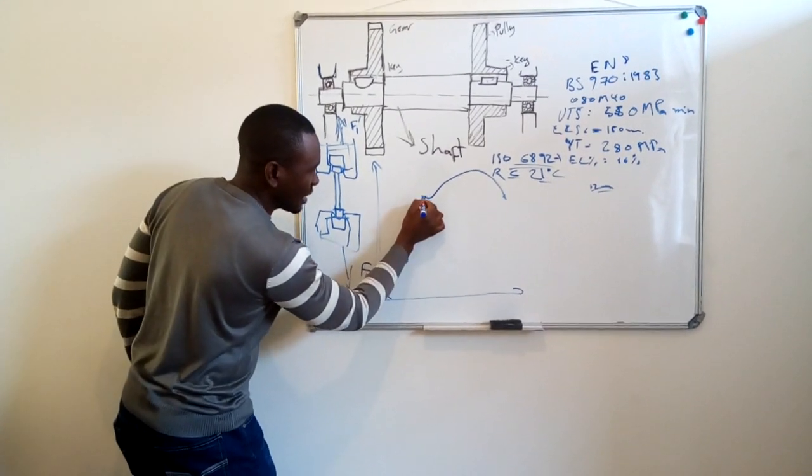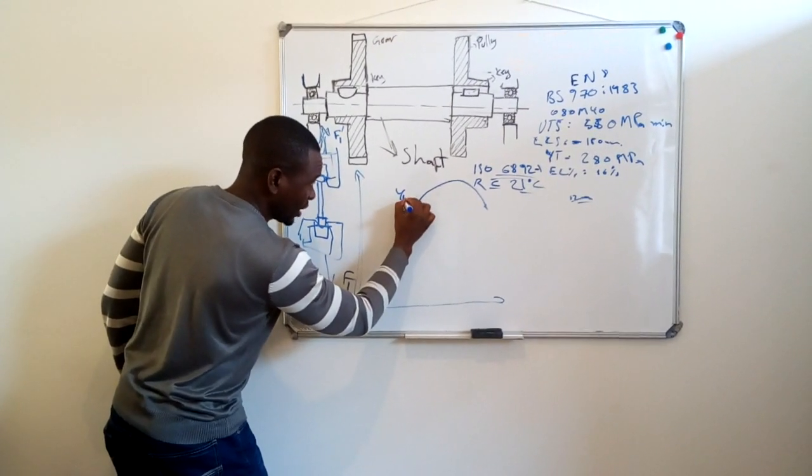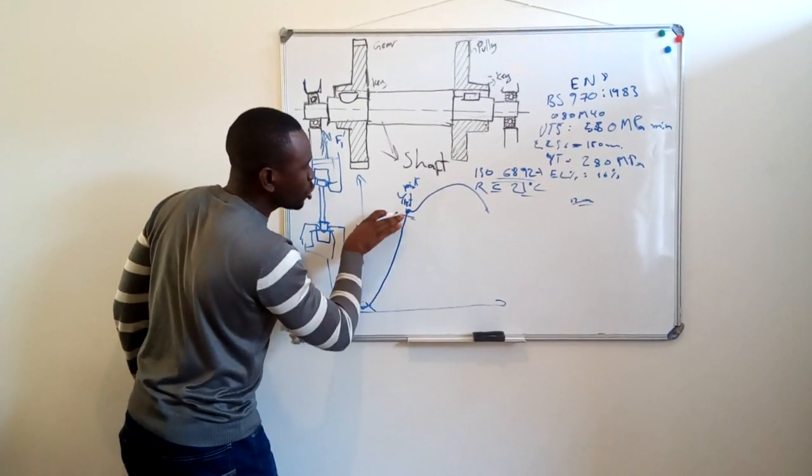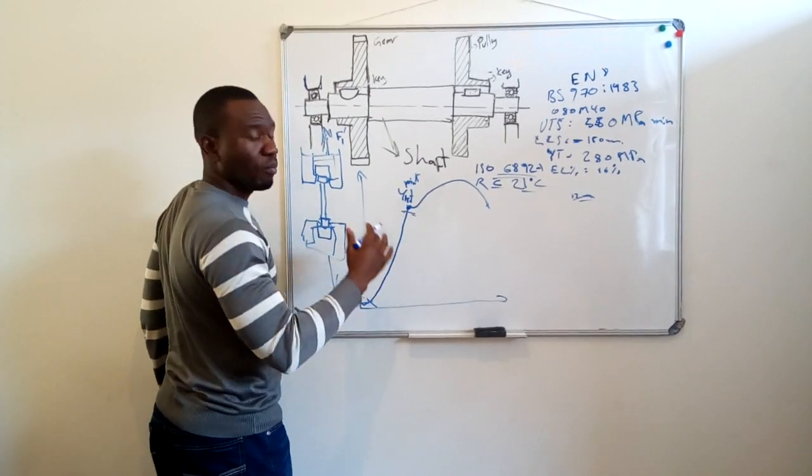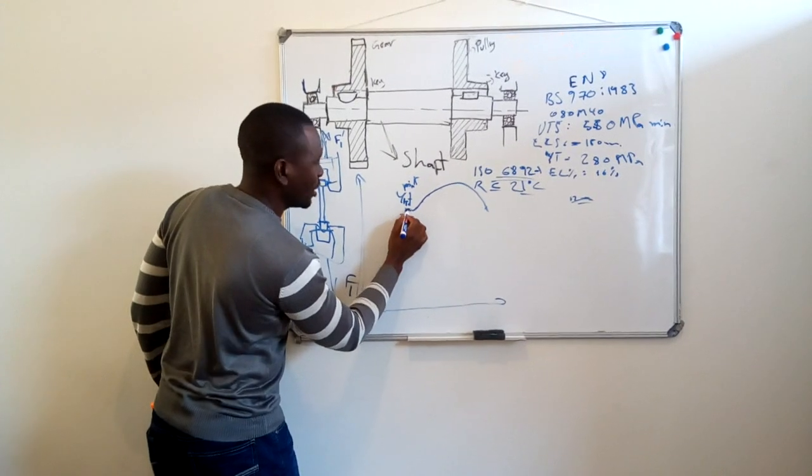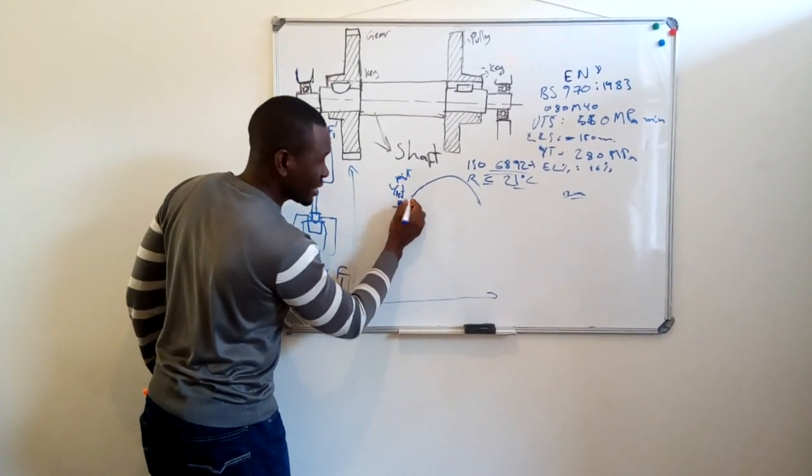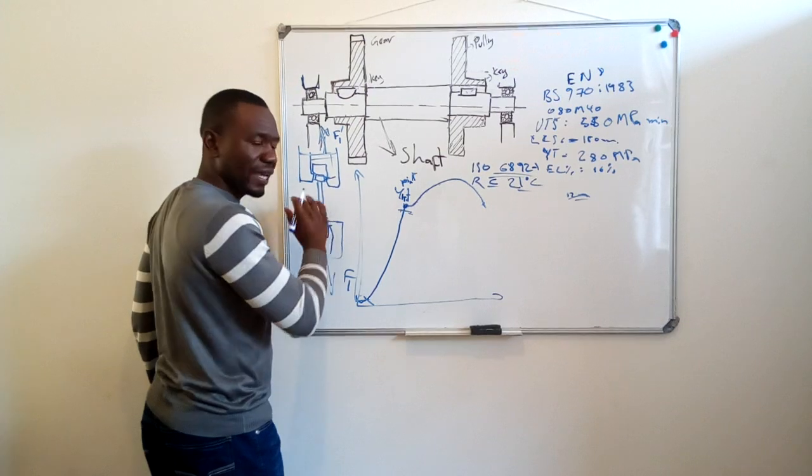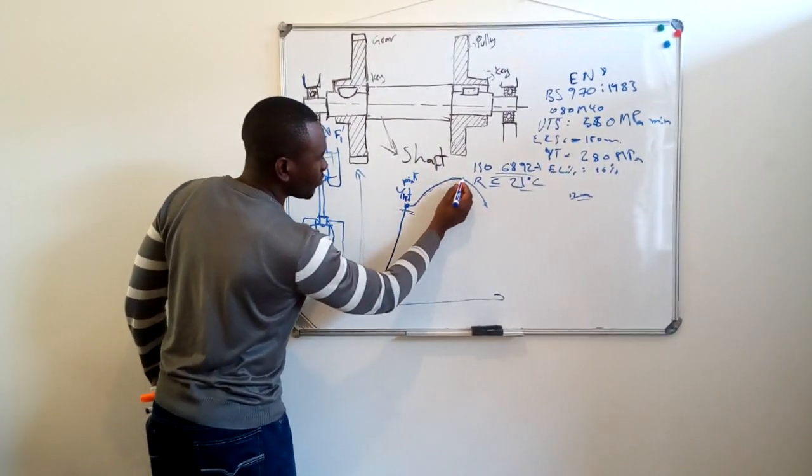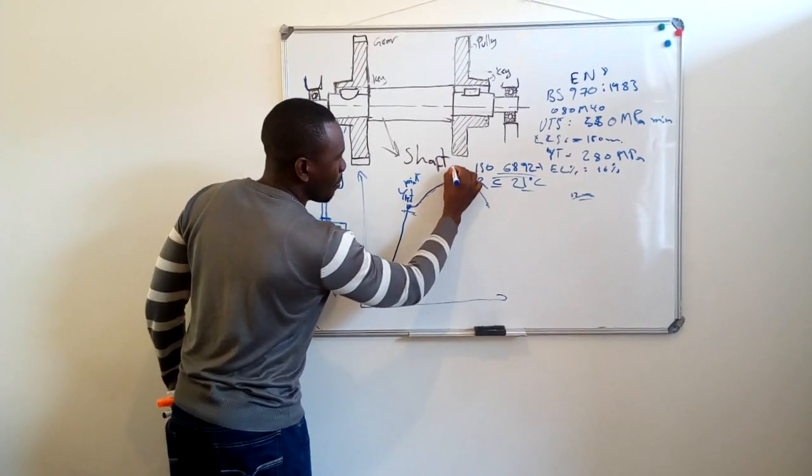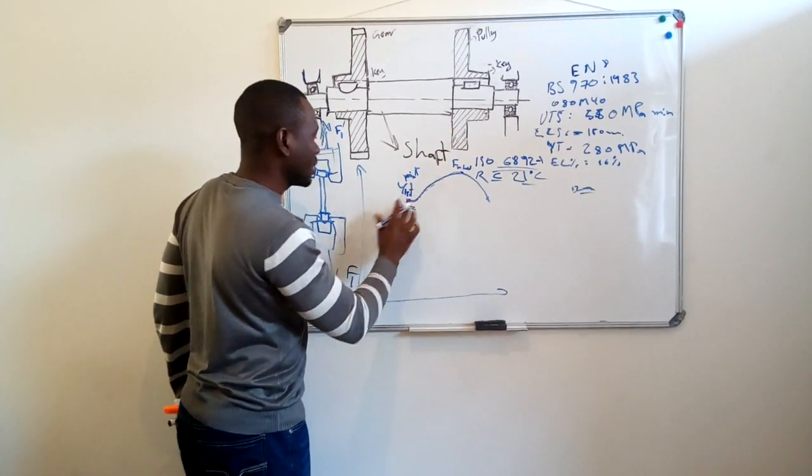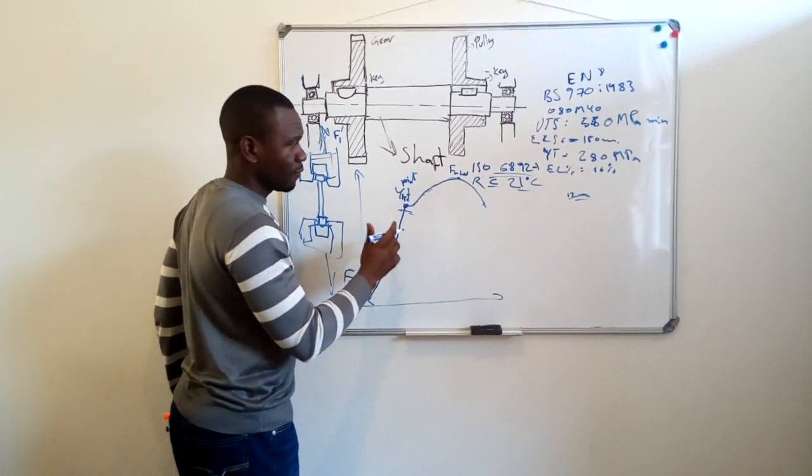Once it has reached that side, this part here that you call yield point, once it has reached the yield point, this is the turning point to the zone of plastic deformation. Once it has reached that force there, even if you stop the machine, the sample won't be able to return to its original sizes or dimensions. And then that's what you call maximum load. This is the highest force that this material can withstand before it breaks.